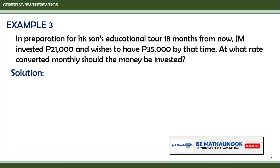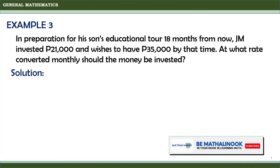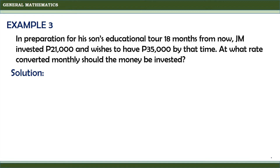Let us consider another example. In preparation for his son's educational tour 18 months from now, JM invested 21,000 pesos and wishes to have 35,000 pesos by that time. At what rate converted monthly should the money be invested? Since we are asked for the rate, we need to solve for the annual rate. The time is 18 months, which equals 1.5 years.